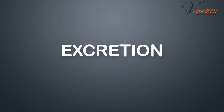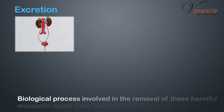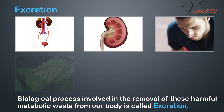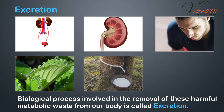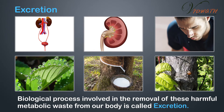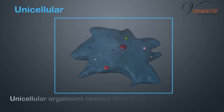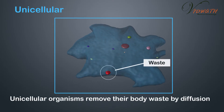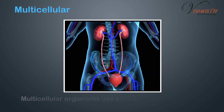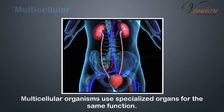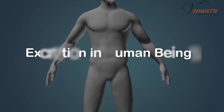Excretion Introduction: The biological process involved in the removal of harmful metabolic waste from a body is called excretion. Unicellular organisms remove their body waste by diffusion, whereas multicellular organisms use specialized organs for the same function. Excretion in human beings is carried out by a dedicated excretory system.